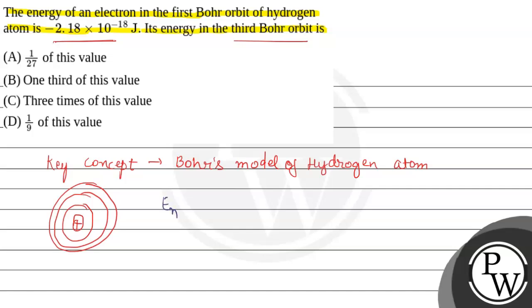...which we represent as En, the energy of an electron in the nth shell, is equal to -21.8 × 10^-19 × Z²/n² joules.